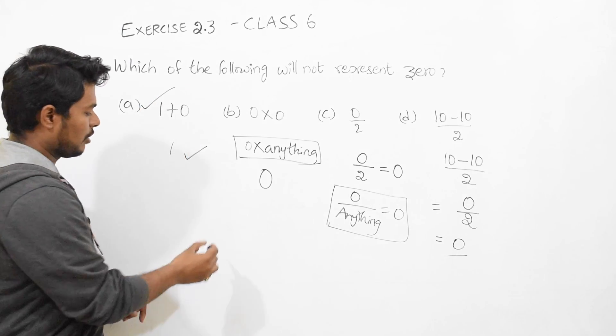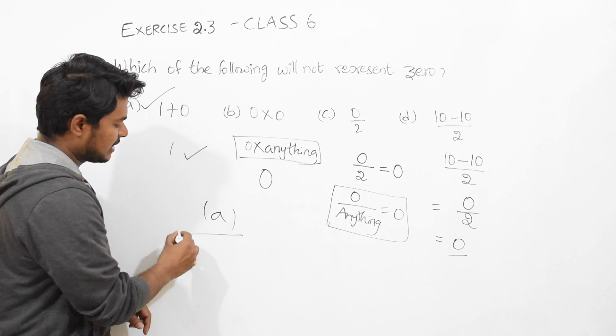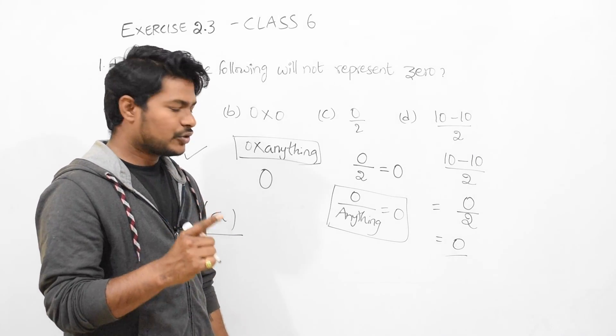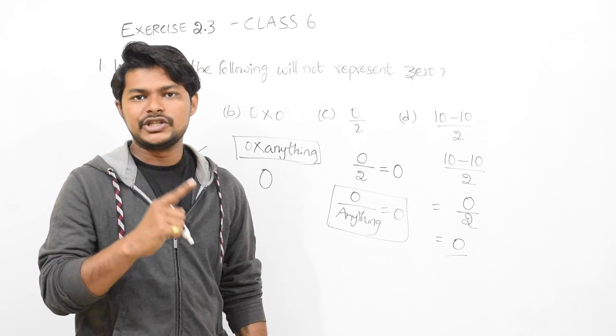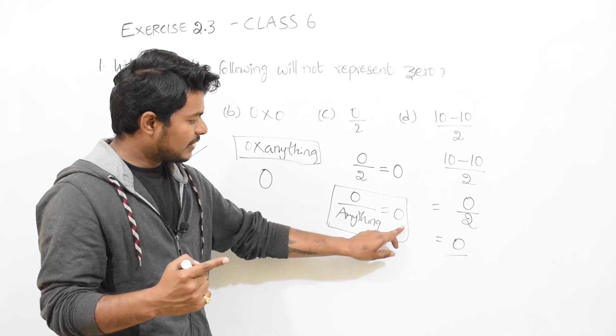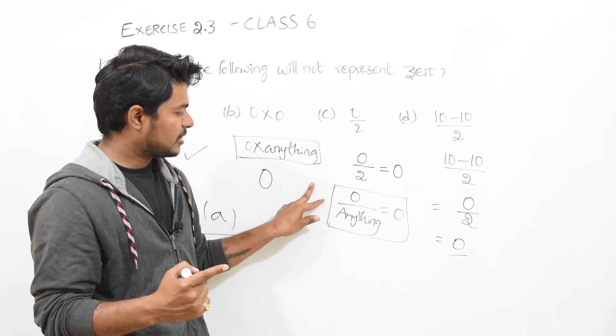Therefore, the correct answer is option A, which will not represent 0. Understand? Only one thing you should remember is when we are multiplying with 0 or dividing anything with 0, that always results in 0. This is the point to remember.